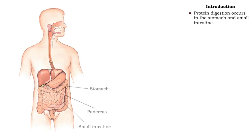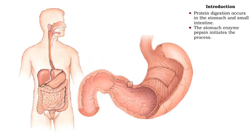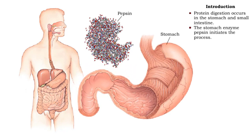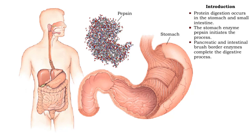Protein digestion takes place in the stomach and small intestine. Pepsin, a stomach enzyme, initiates the process by fragmenting proteins into peptides. Pancreatic and intestinal brush border enzymes complete the digestive process.